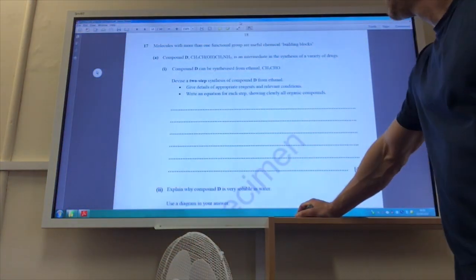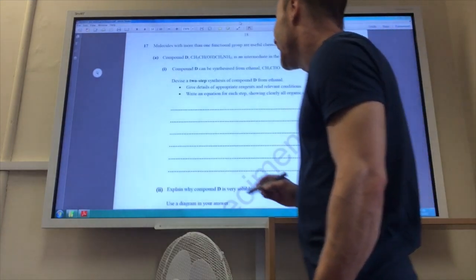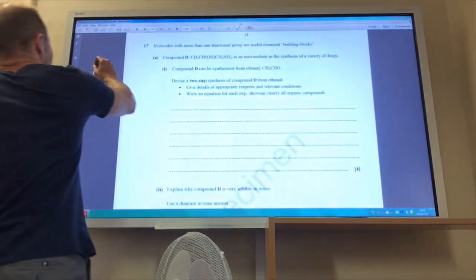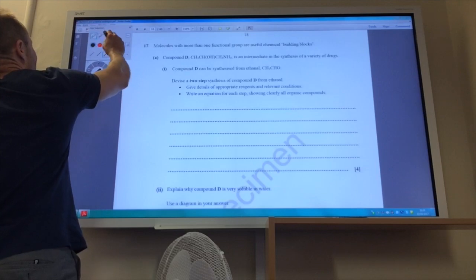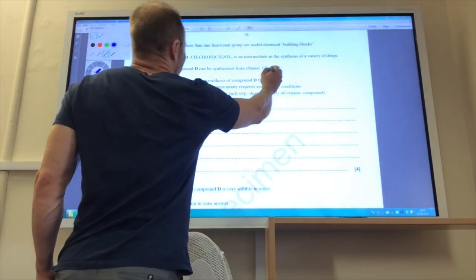Moving on to question 17, we've got a compound D which we want to make from ethanol. The key thing to note for compound D is that it actually has an additional carbon atom. If you count up in ethanol, ethanol's obviously got two carbons, there and there.